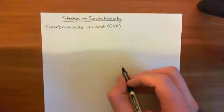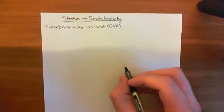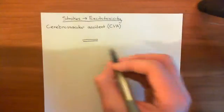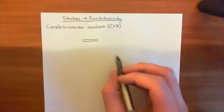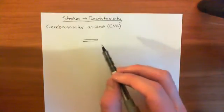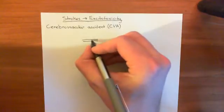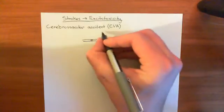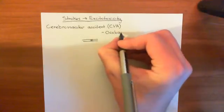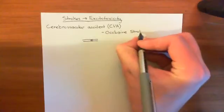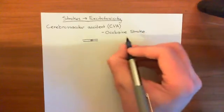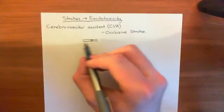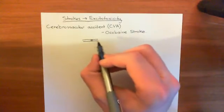Basically what happens is that the blood supply to a portion of the brain goes down for some reason. There are two reasons this might happen. If a blood vessel supplying a certain portion of the brain gets occluded by something — some sort of clot — what you have suffered is an occlusive stroke. An occlusive stroke means the blood supply went down because of some occlusion blocking the artery, such as a thrombus that formed in that portion of the blood vessel, or something that came from another portion of the body — in that case it's called a thromboembolus.